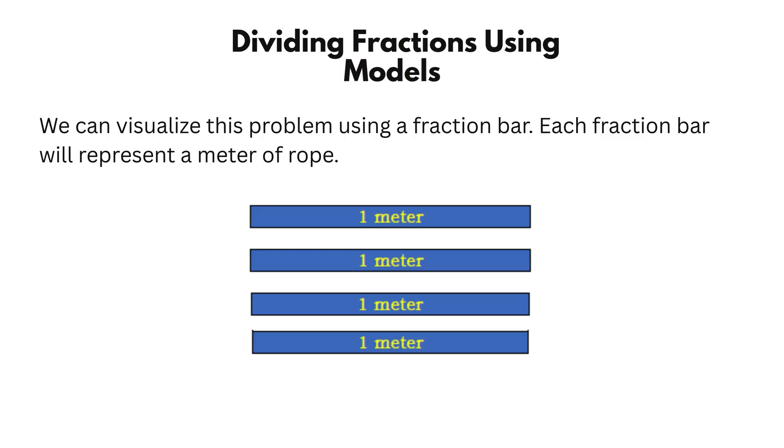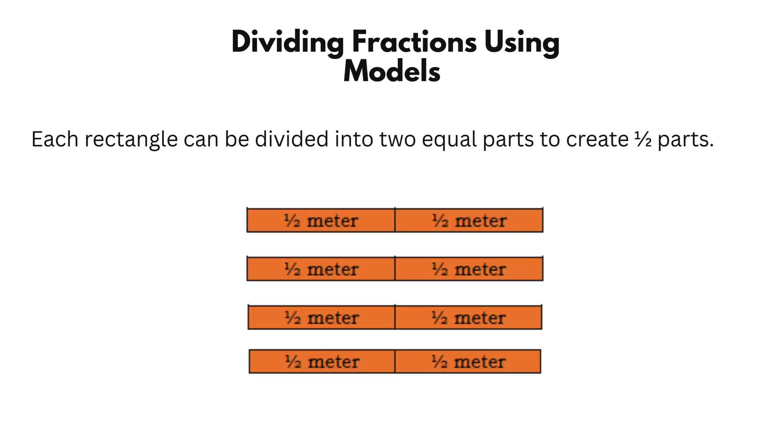Let's go back to our rope problem. A 4-meter rope is cut into half-meter pieces. Using a fraction bar model, we divide each meter into halves. We get 8 pieces in total. So, 4 divided by 1 half equals 8.